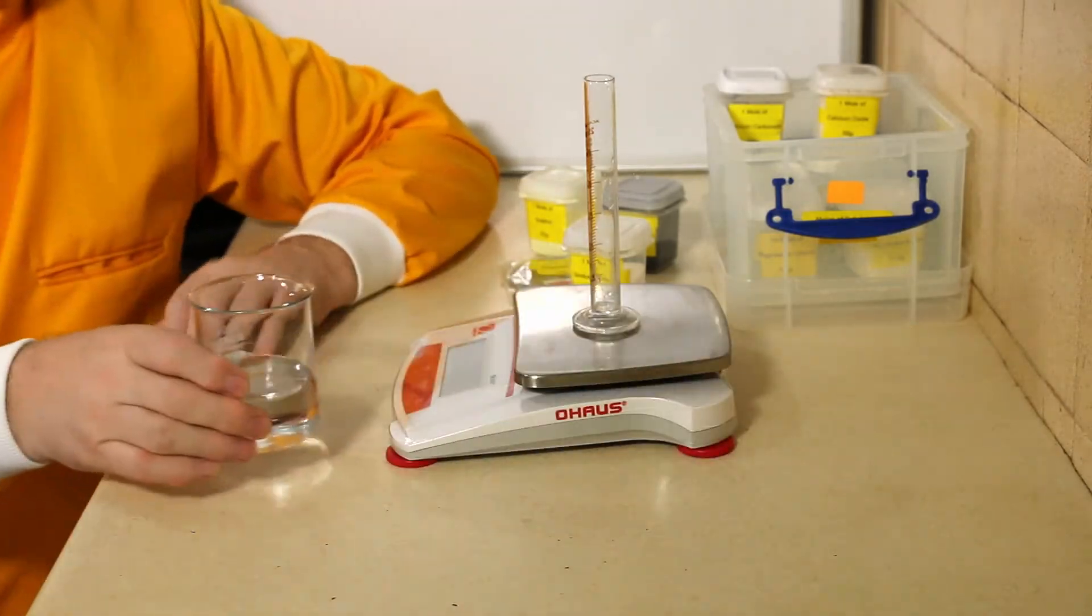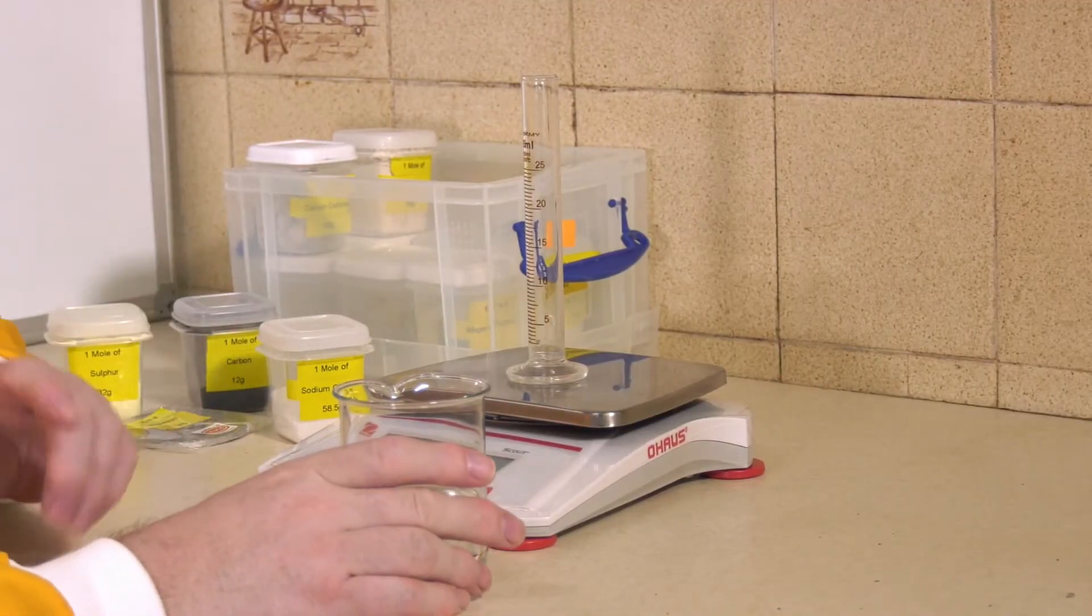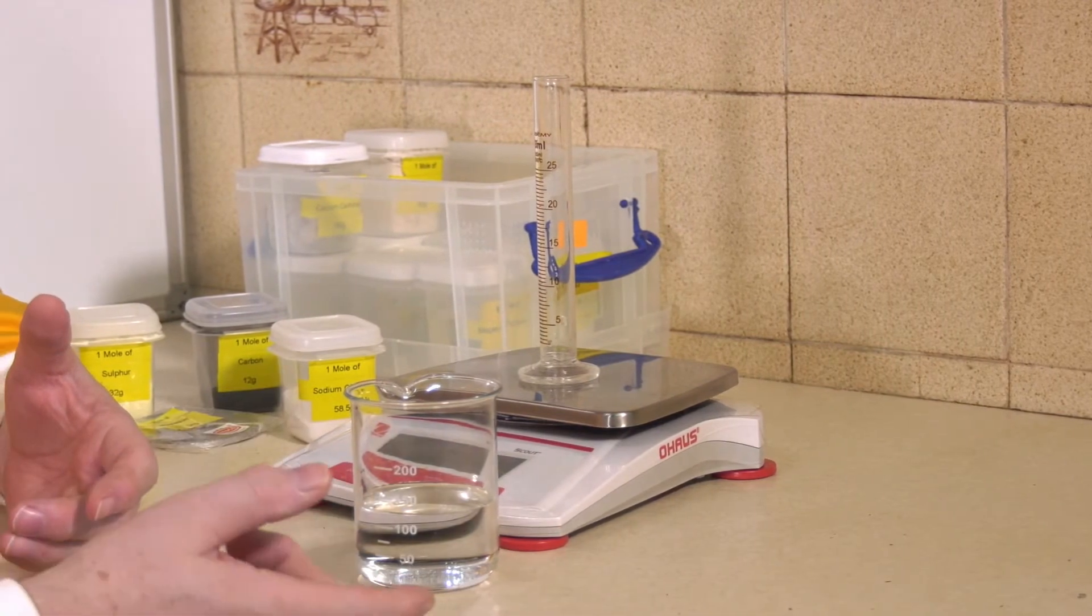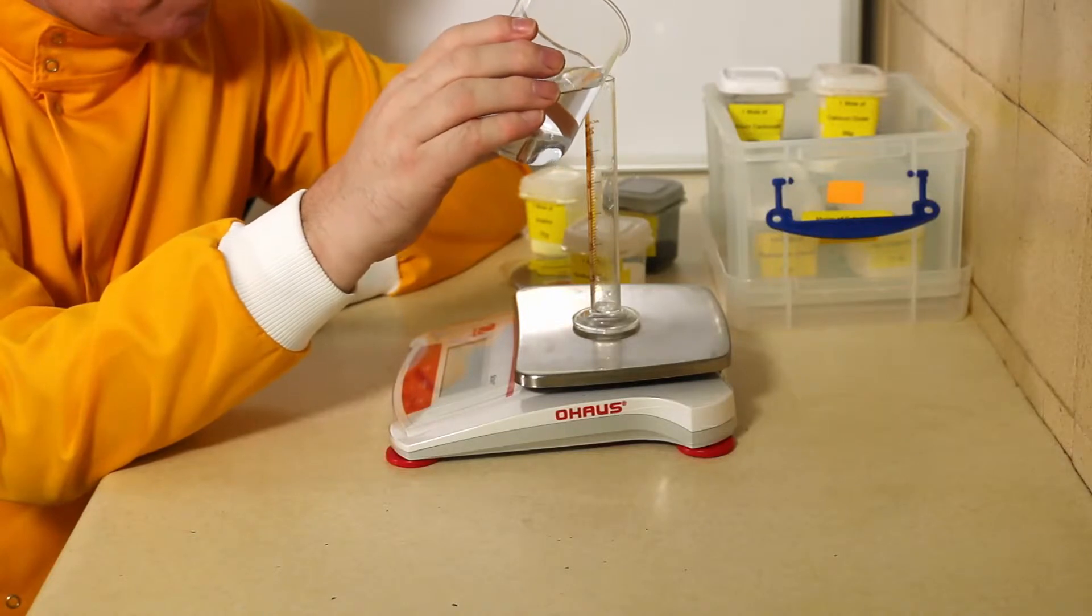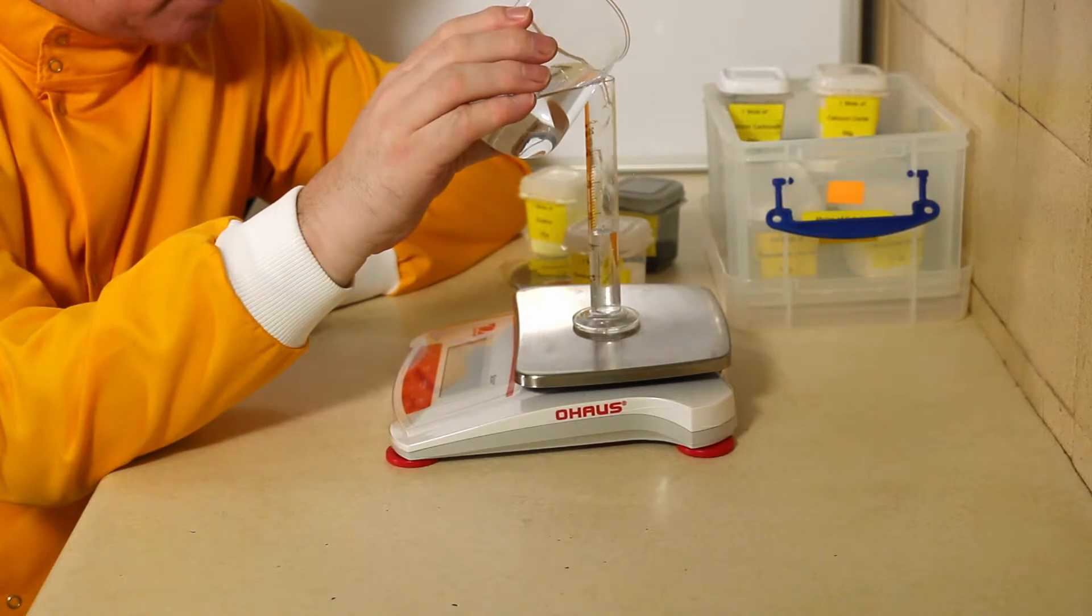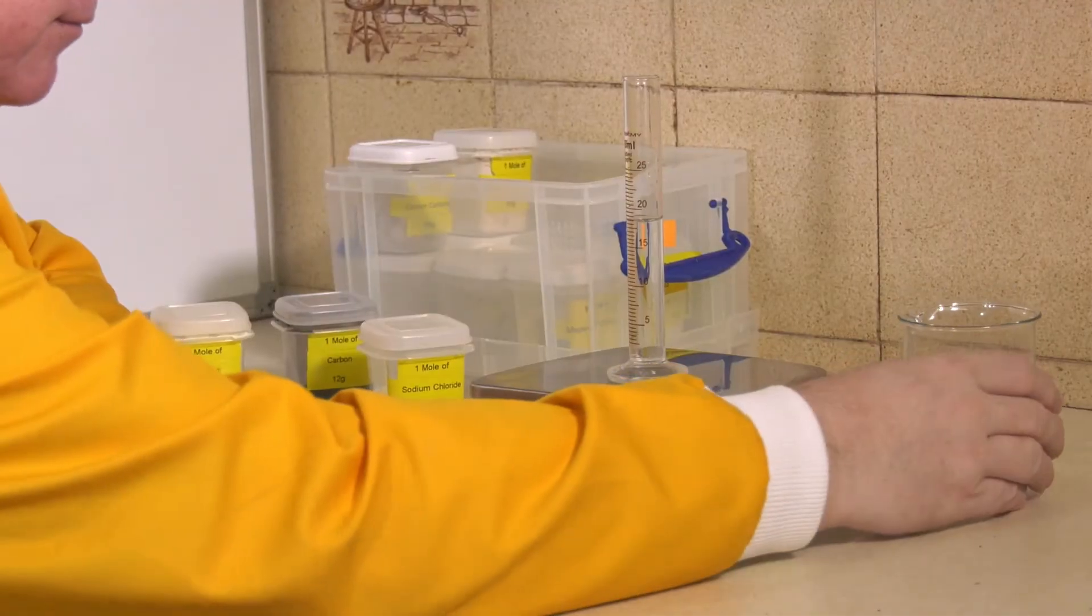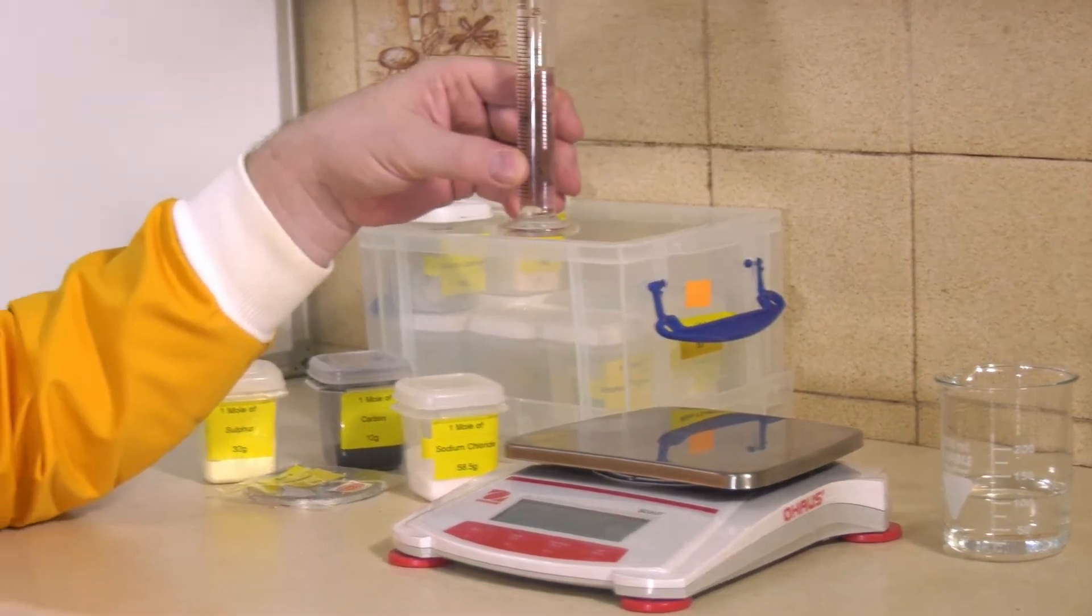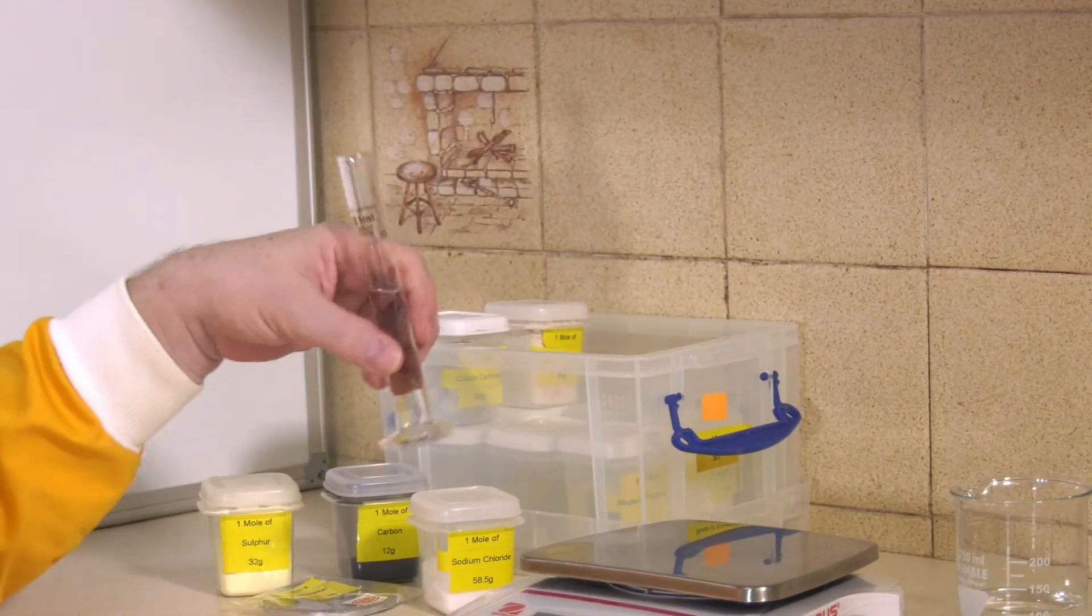I'm gonna make one mole of water. One mole of water is 18 grams - 16 for oxygen and two for the hydrogens. So if I pour in some water... there we have 18 grams of water, 18 centimeter cubed of water, and that has the same number of molecules in it.